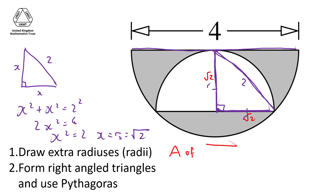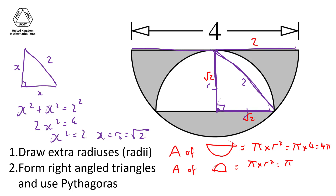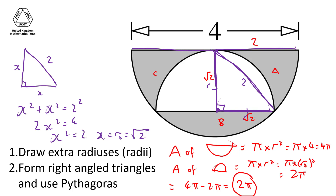Now we can find all the areas. The area of the big semicircle is Pi times its radius squared: Pi times 4, so 4 Pi — but halved for a semicircle. The area of the smaller semicircle is Pi times root 2 all squared, which is 2 Pi, again halved. So the shaded region — areas A, B and C — is the big one minus the small one: 4 Pi minus 2 Pi, which is 2 Pi. The question asked what fraction of the shape is shaded, and the answer is half: 2 Pi out of 4 Pi. It doesn't immediately look obvious that half is shaded, but it is.